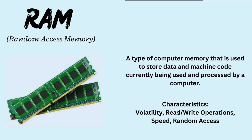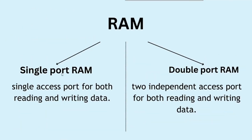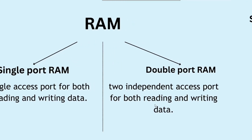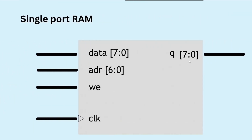It supports random access because any storage location in memory can be directly accessed. RAM is divided into single port RAM and double port RAM. Single port RAM has a single access port for both reading and writing data, while double port RAM has two independent access ports for both reading and writing data. This is the block diagram for the single port RAM.